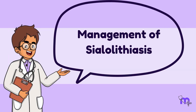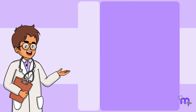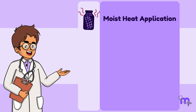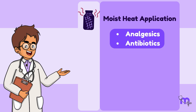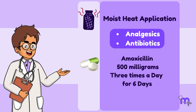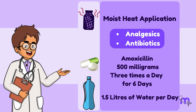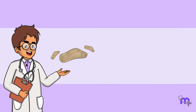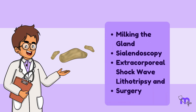Moving on to the management of sialolithiasis. For a symptomatic patient, treatment is primarily supportive. It includes moist heat application, analgesics, antibiotics such as amoxicillin (typically 500 mg three times a day for 6 days), and drinking at least 1.5 litres of water per day. If conservative measures don't work or the stone is large, removal options include milking the gland, sialendoscopy, extracorporeal shockwave lithotripsy, and surgery.